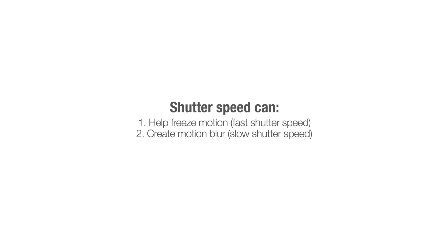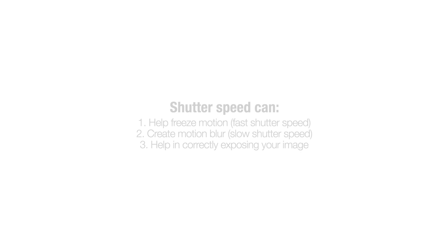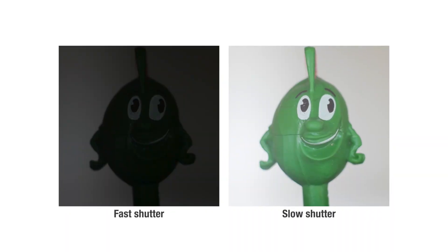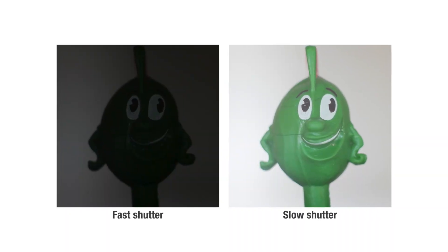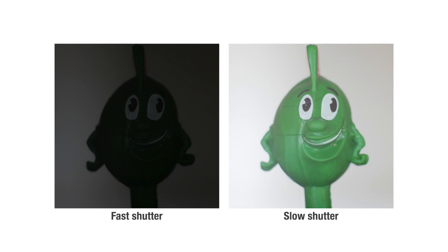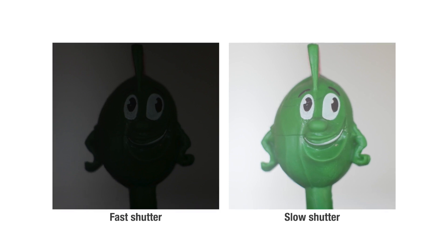We've discussed two important creative effects shutter speed can have on your image. The final and most important effect that shutter speed has on your image is the exposure. Remember that we've been talking about how exposure is affected by ISO, aperture and shutter speed. Shutter speed alone can be used to determine the correct exposure of an image, albeit with some limitations. For example, a quicker shutter speed or short exposure time will result in a darker image, while a longer shutter speed or lengthy exposure time will result in a much brighter image.